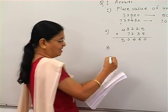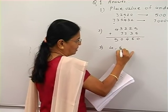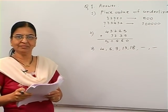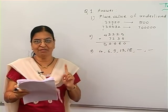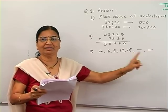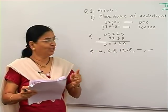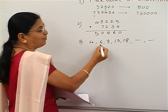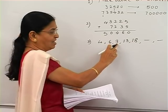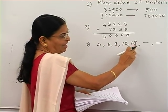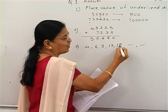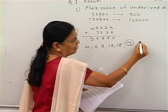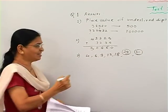Then the third — complete the series. The series is 4, 6, 9, 13, 18, and two more numbers are required. If you have written 24 and 31, that is the correct answer. The difference between 4 and 6 is 2, then 3, then 4, then 5 — so the next difference must be 6. So 18 plus 6 gives 24, and then plus 7 gives 31.